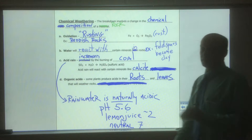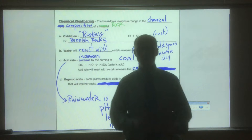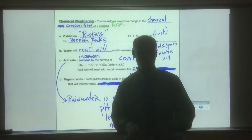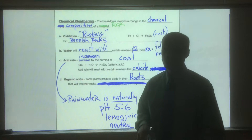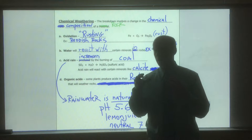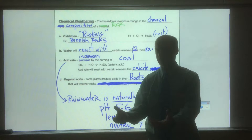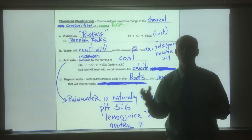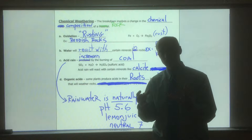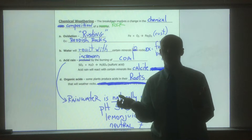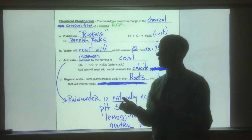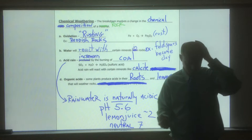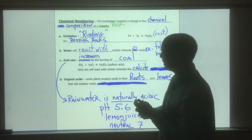Now we're on to chemical weathering. This is a process where there is a chemical reaction among the minerals of the rock that changes it into something else. A good example of a chemical change is burning — you burn wood and there's a chemical reaction. These rocks aren't burning, but here are some examples of chemical weathering.